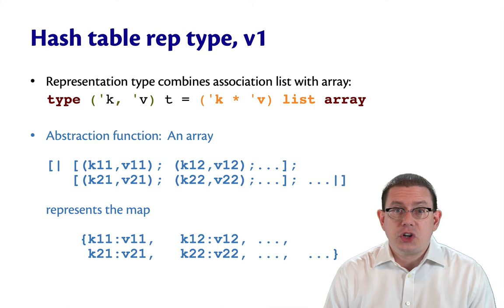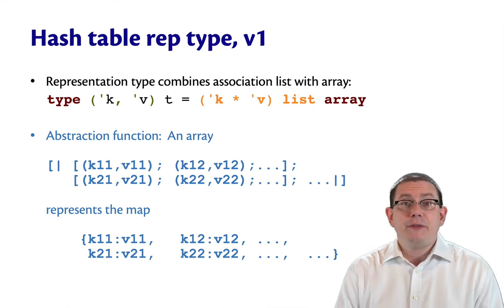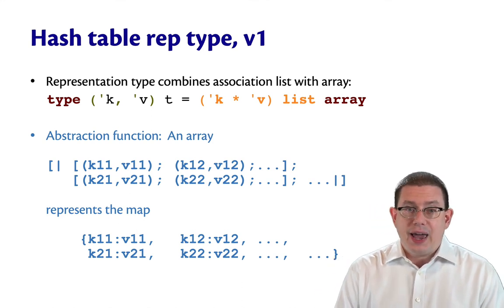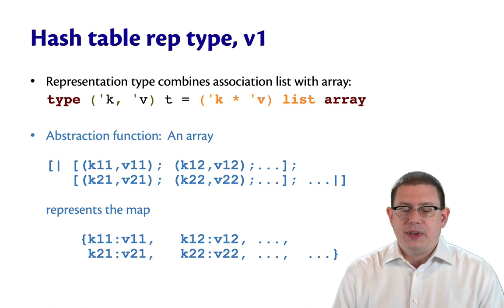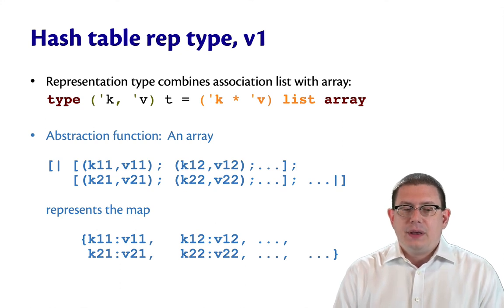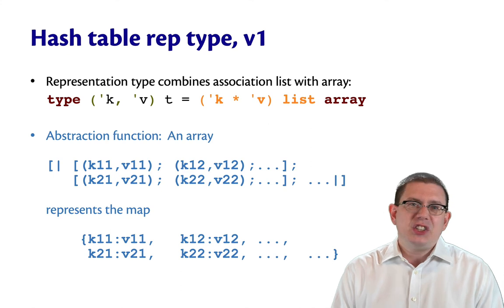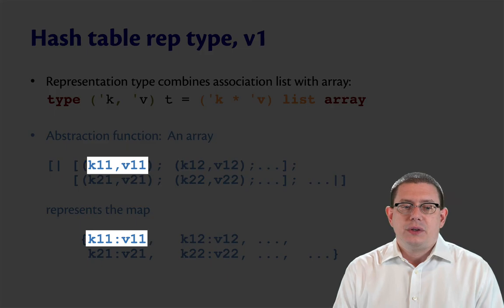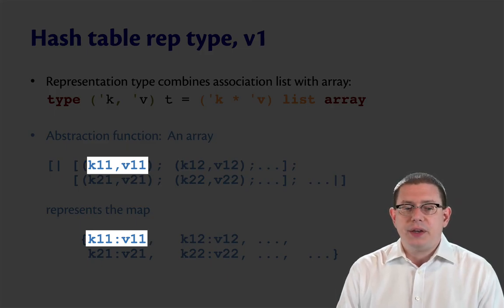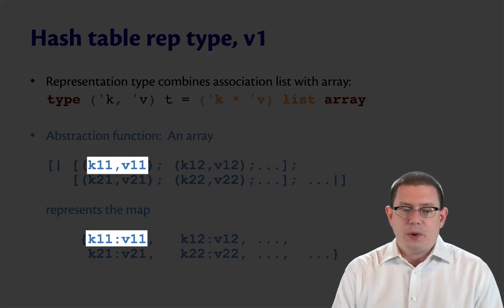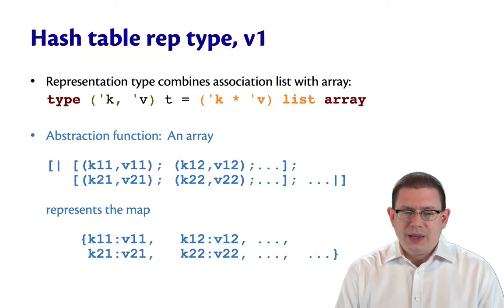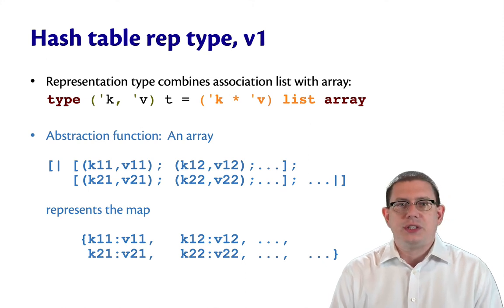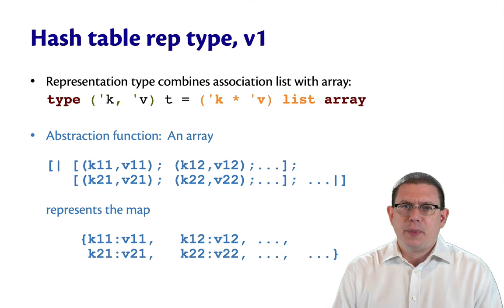So here's the abstraction function I have in mind for this representation type. If I have an array, and if that array at each index in it has an association list of key value bindings, then that represents the map that just takes all of those bindings and puts them individually into the map. So if the array has a binding from k11 to v11, then the map has a binding from k11 to v11, and so forth. It's as if we just ignore all those different levels of array indices and association list entries, and just collapse it all down into one set of bindings.